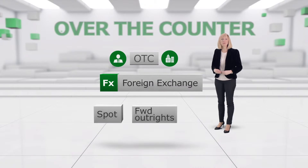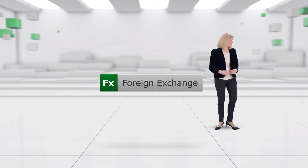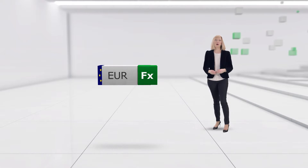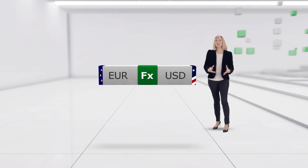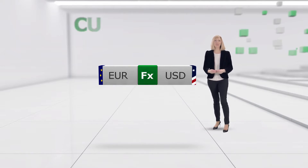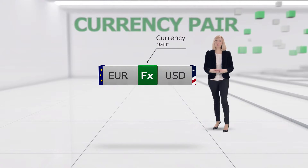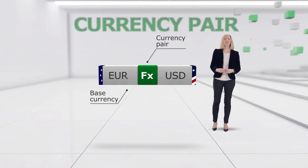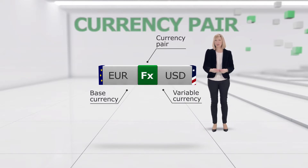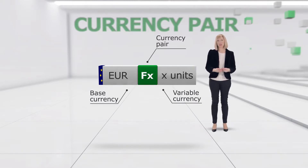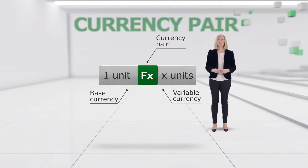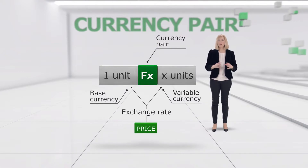Now let's look at the main features of Forex. When you trade Forex you're buying one currency and at the same time selling another currency. So Forex is always traded as a currency pair, with the first currency in the pair referred to as the base currency, and the second currency being the variable currency. The second currency is valued as X amount of units compared with one unit of the first currency. This amount is the exchange rate of the pair — in other words, it is the price for a pair.